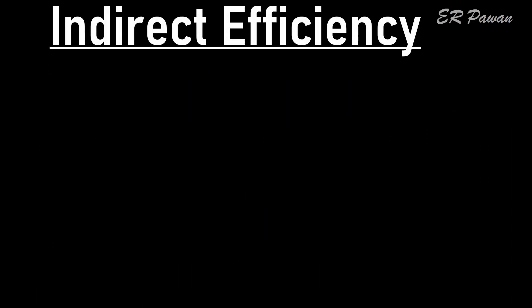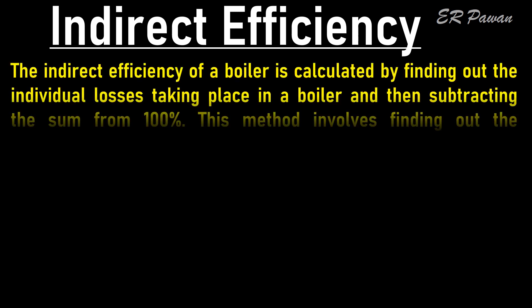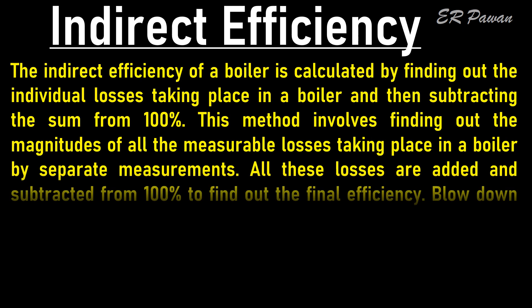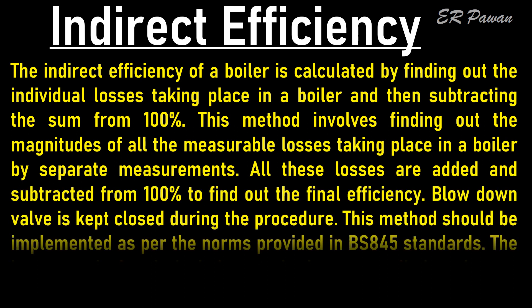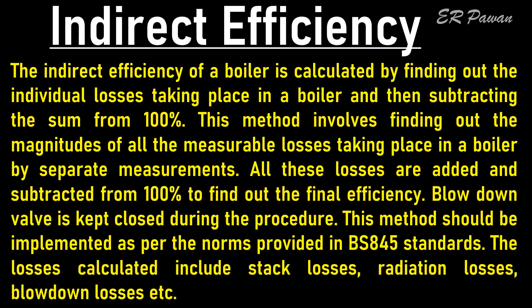Indirect efficiency: The indirect efficiency of a boiler is calculated by finding out the individual losses taking place in a boiler and then subtracting the sum from 100%. This method involves finding out the magnitudes of all measurable losses by separate measurements. All these losses are added and subtracted from 100% to find the final efficiency. The blowdown valve is kept closed during the procedure. This method should be implemented as per the norms provided in BS 845 standards. The losses calculated include stack losses, radiation losses, blowdown losses, etc.